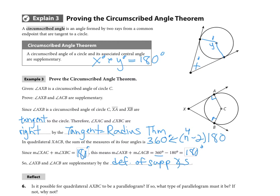And so by the definition of supplementary angles, we have two supplementary angles for the outside circumscribed angle right here and the inside the circle associated central angle.